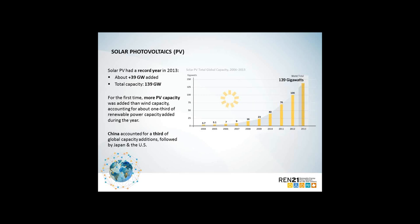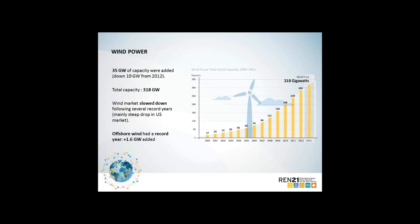More than 35 gigawatts of wind power capacity was added in 2013 for a total above 308 gigawatts, though the market was down nearly 10 gigawatts compared to 2012, reflecting primarily a steep drop in the US market. Offshore wind had a record year with 1.6 gigawatts added, almost all in the European Union. China saw wind generating 140 billion kilowatt hours in 2013, up 40% over 2012, exceeding nuclear generation for the second year running. In Africa, wind power has a foothold but there is a shortage of skilled personnel to support rapid growth.